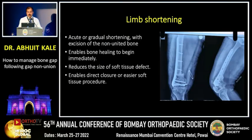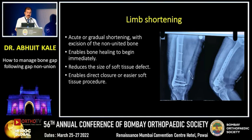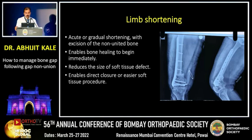Limb shortening can be done either in the form of acute shortening or gradual shortening. With excision of the ununited bone, the sclerotic tails are removed and we aim to get the two bleeding bone ends together after appreciating the paprika sign. This enables bone healing and the process of union begins immediately.